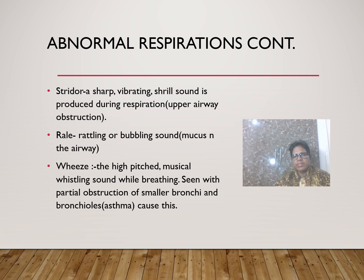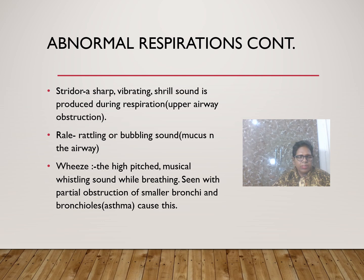More abnormal respirations: stridor — a sharp, vibrating, shrill sound produced during respiration, seen with upper airway obstruction; rale — a rattling and bubbling sound, occurring when there is mucus in the airway; wheeze — a high-pitched musical whistling sound while breathing, seen with partial obstruction of smaller bronchi and bronchioles.